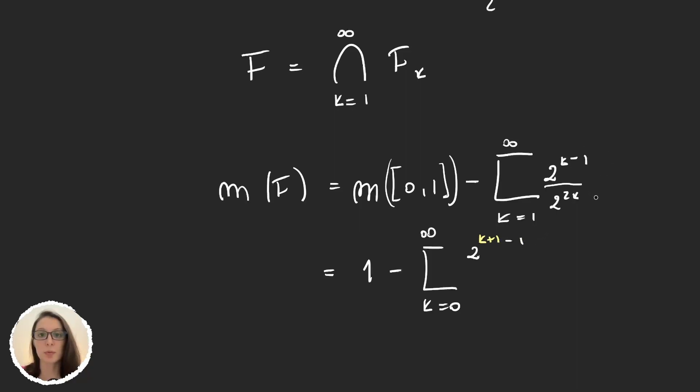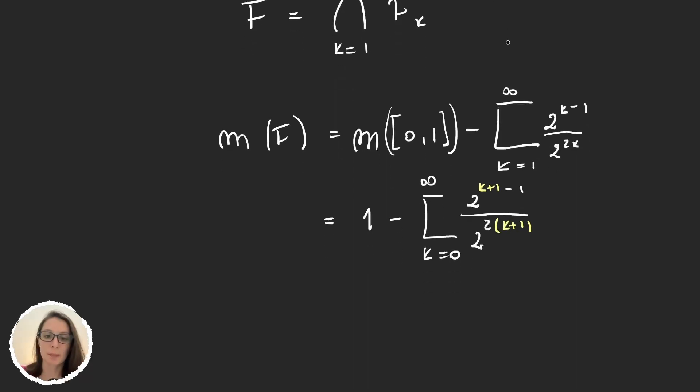Instead of 2k, it will be 2(k+1). Let's see if we can write this a bit better. We have 1 minus the sum. 2^(k+1-1) is 2^k divided by 2^(2k+2). So this is obviously 1 minus the sum of... and we would have 1 over this 2k; with this k it removes 1, so we would have 2^(k+2).